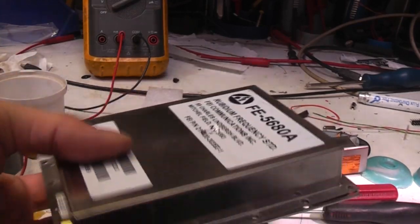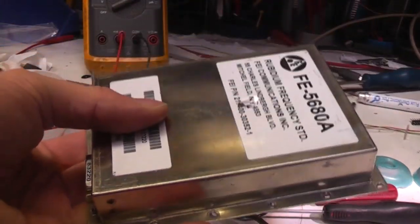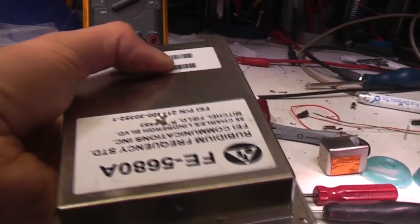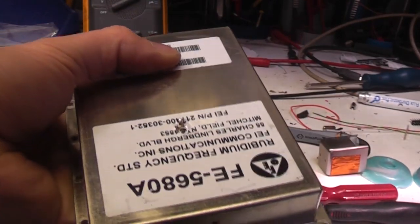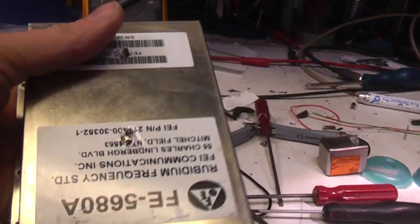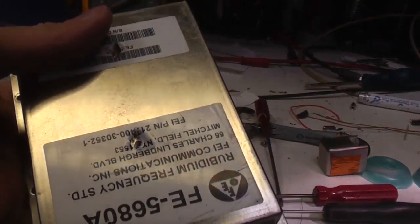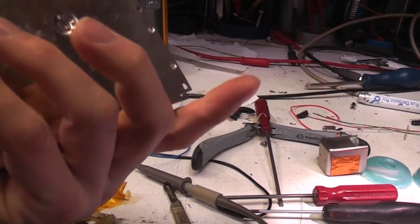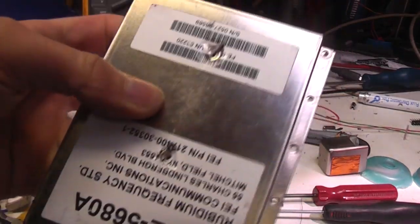I recently watched Dave Jones from the EEVblog take apart one of these Rubidium Frequency Standards. I thought that's an interesting little toy, and they're so cheap—they're like 25 quid from China. They come from scrap cellular communications equipment. They normally cost about a thousand dollars each as a new product, so I thought I'd get hold of one.